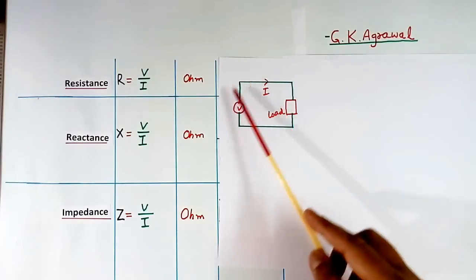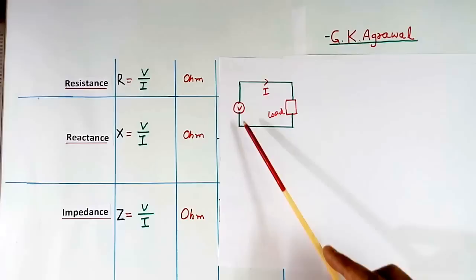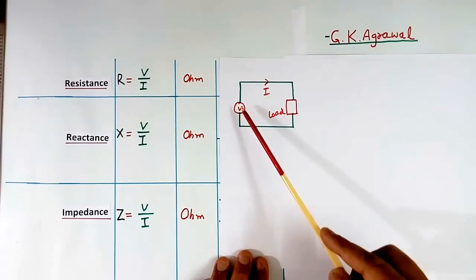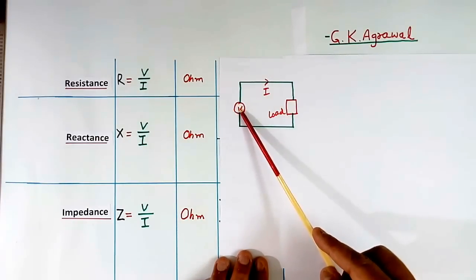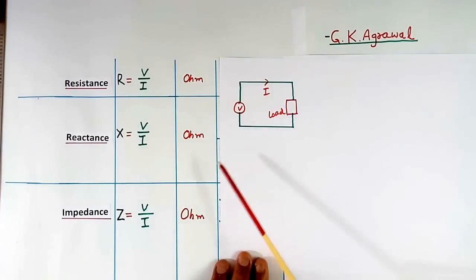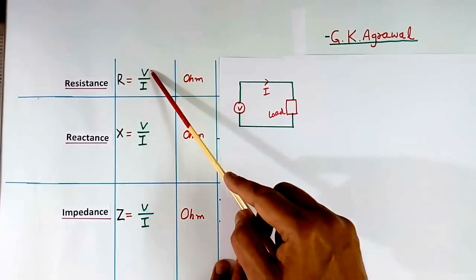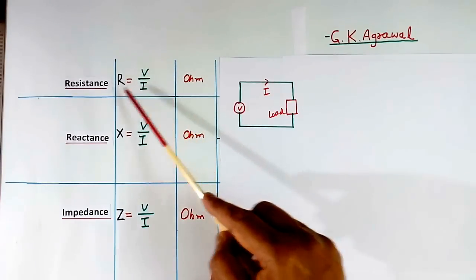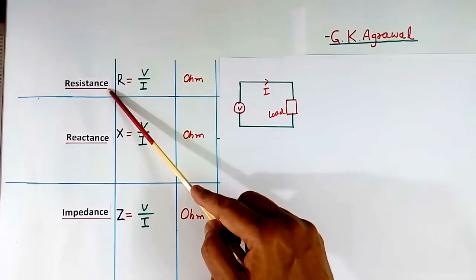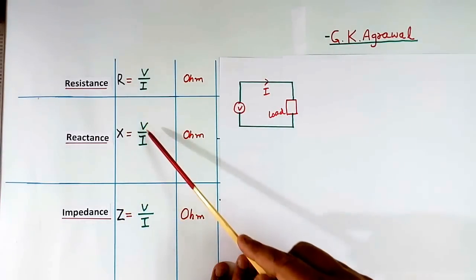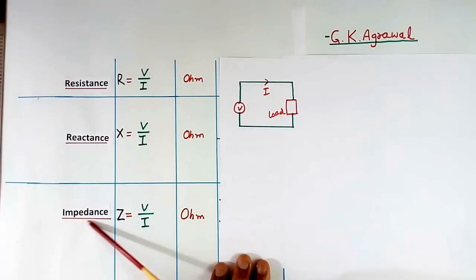Here I have shown a simple circuit. This is AC supply. Voltage of AC supply is V. This is load, and current I is flowing. When we divide V by I, then we get resistance. To get reactance also, we formulize V by I. To get impedance also, we formulize V by I.